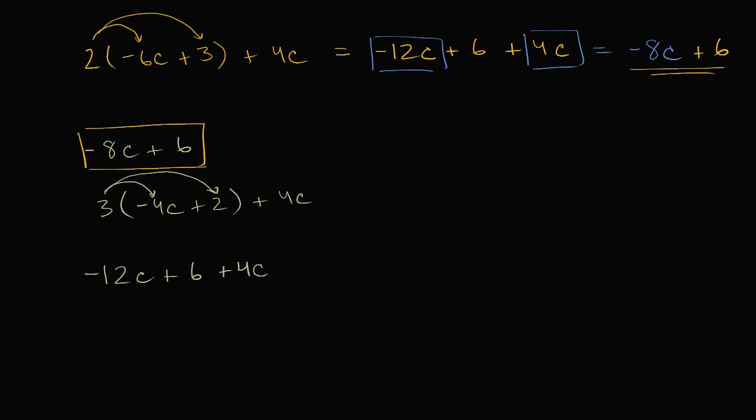And then we can add the terms that involve C. Negative 12 C and four C. You add those together, you're going to get negative eight C. Negative eight C plus six. Plus six, which is exactly what these other ones are. So all of these, all of these expressions are actually equivalent. This one, that one, and that one.